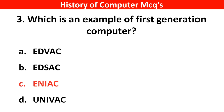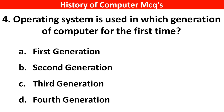Next question. Operating system was used in which generation of computers for the first time? Options A: First generation, B: Second generation, C: Third generation, D: Fourth generation. Right answer is option C, Third generation.